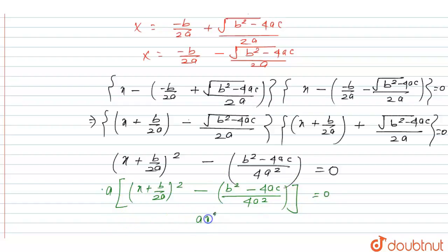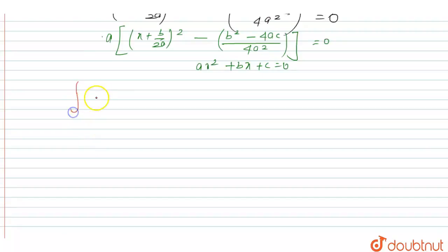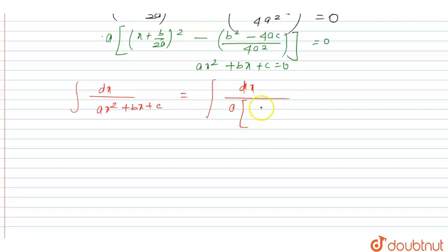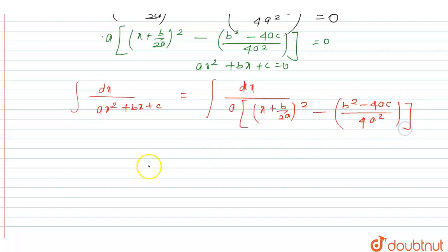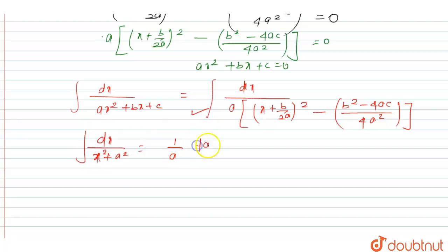This value is equal to ax² + bx + c = 0. Therefore, the integration of dx upon ax² + bx + c can be written as the integration of dx upon a into [(x + b/2a)² - (b² - 4ac)/(4a²)]. Comparing this with the standard form ∫dx/(x² + a²) = (1/a) tan⁻¹(x/a) + C.